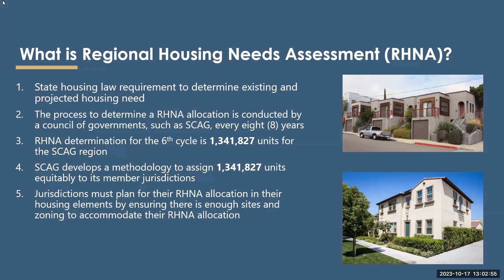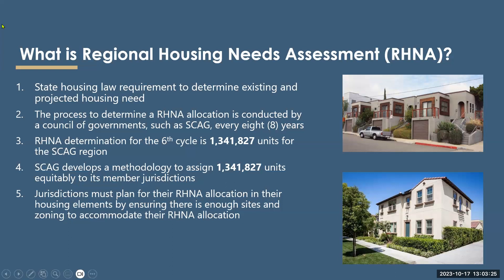So what is the Regional Housing Needs Assessment, RHNA? RHNA is a state-mandated process to determine existing and projected housing need in California. The RHNA process must be repeated every eight years, and we're currently in the sixth cycle, which runs from 2021 to 2029. The RHNA determination for the sixth cycle is approximately 1.3 million housing units for the SCAG region. SCAG develops the methodology to assign the 1.3 million units to its jurisdictions, and jurisdictions must plan to accommodate these units in their housing elements — indicating where future housing could be built. The jurisdictions don't actually have to ensure that housing is built, just that the zoning is in place and the city has available sites on which this housing can potentially be built.